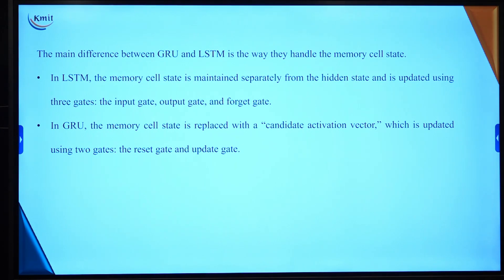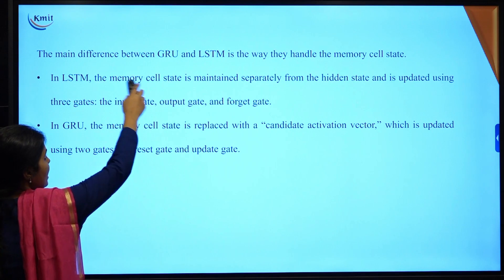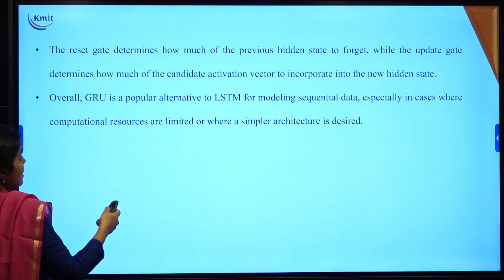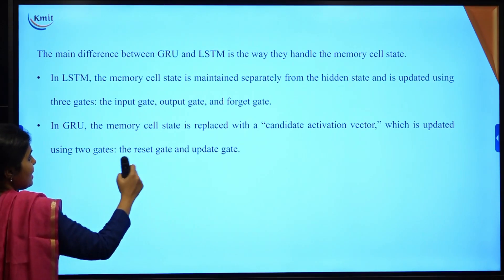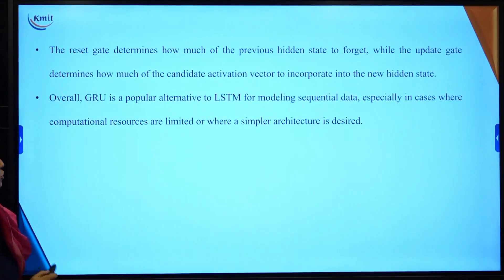In GRU, the memory cell is replaced with a candidate activation vector. Instead of three gates, we have only two gates: the reset gate and the update gate. So the input gate, output gate, and forget gate of LSTM are replaced with the reset gate and update gate in GRUs.